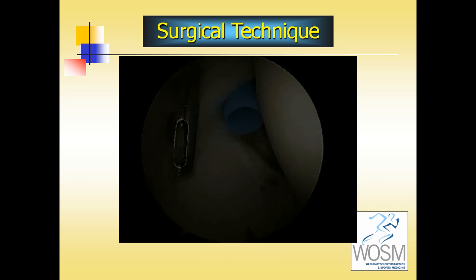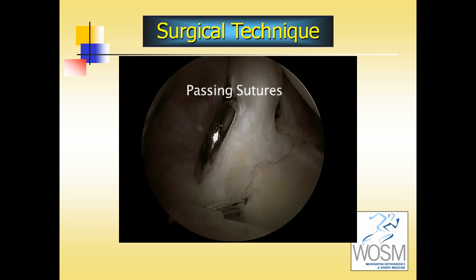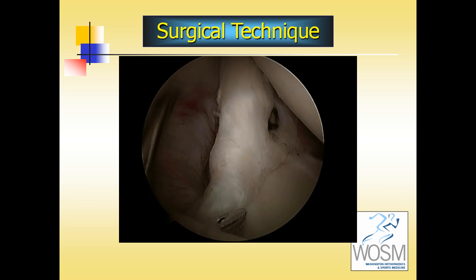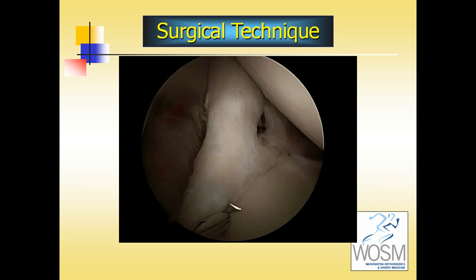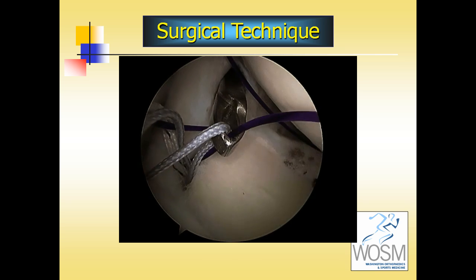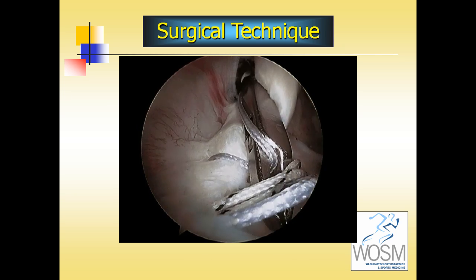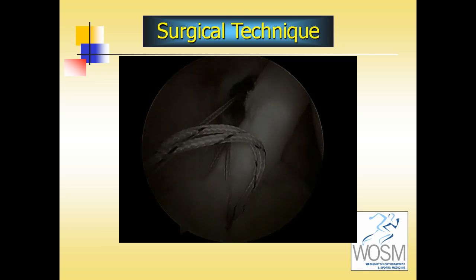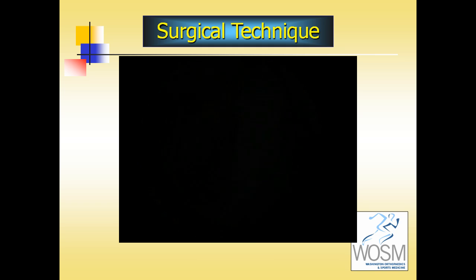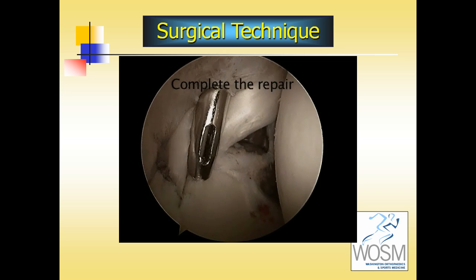The first anchor is placed at the posterior superior glenoid rim. It is made of a bioabsorbable material and has two sutures attached. We then use a spectrum repair needle — like a small sewing needle introduced through a cannula in the front of the shoulder — passing it underneath the entire circumference of the superior labrum to pass a monofilament suture through. When retrieved with a limb of the fiber wire permanent suture, it can be shuttled through, as seen here. Grasping both limbs of the same suture and retrieving them out the portal, a knot is tied to bring the superior labrum into good apposition to the glenoid rim. The knots are tied superior to the labrum to avoid impingement on the articular surface.